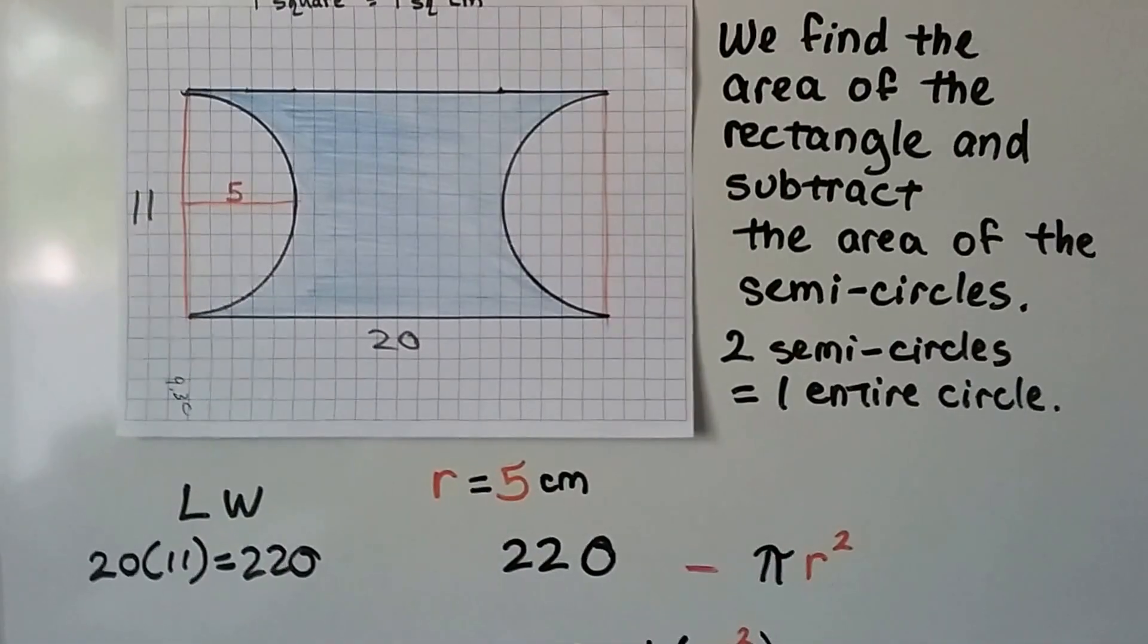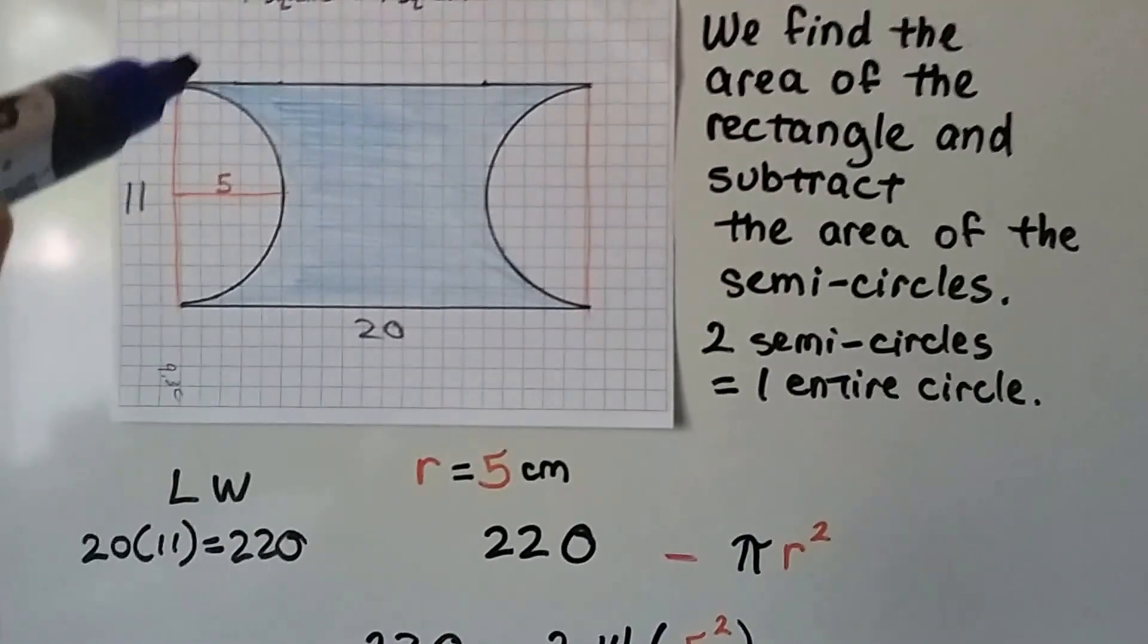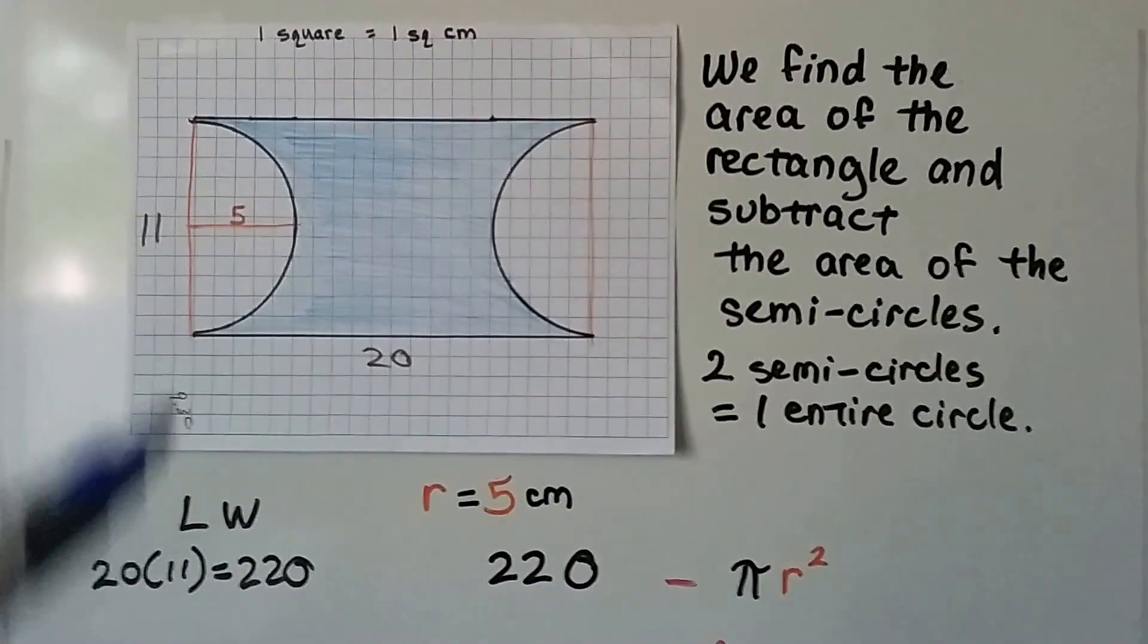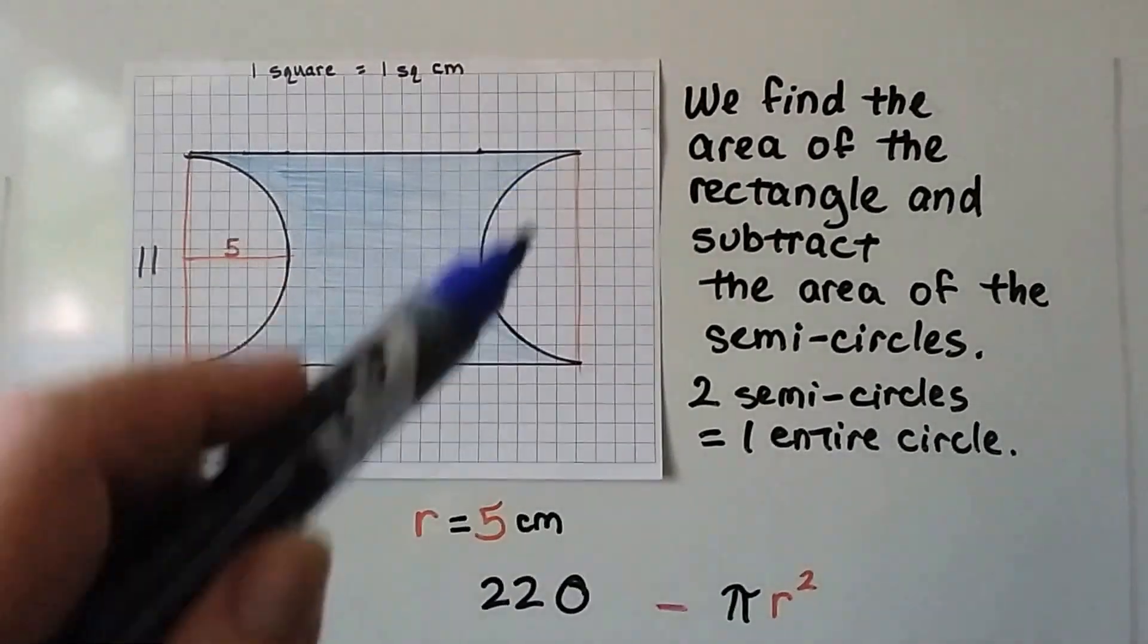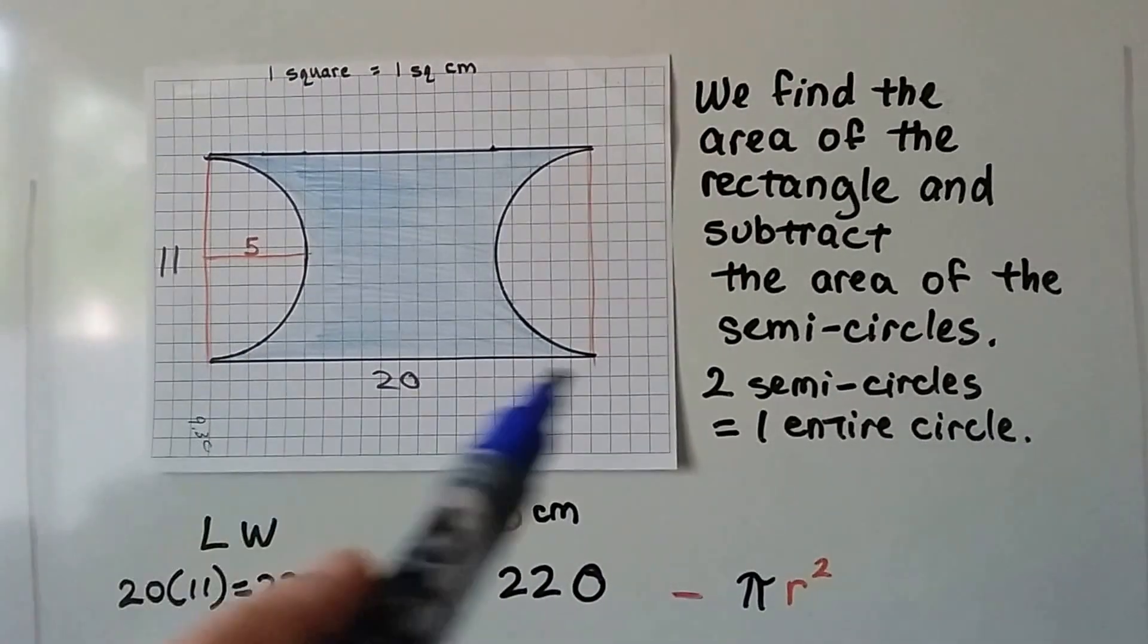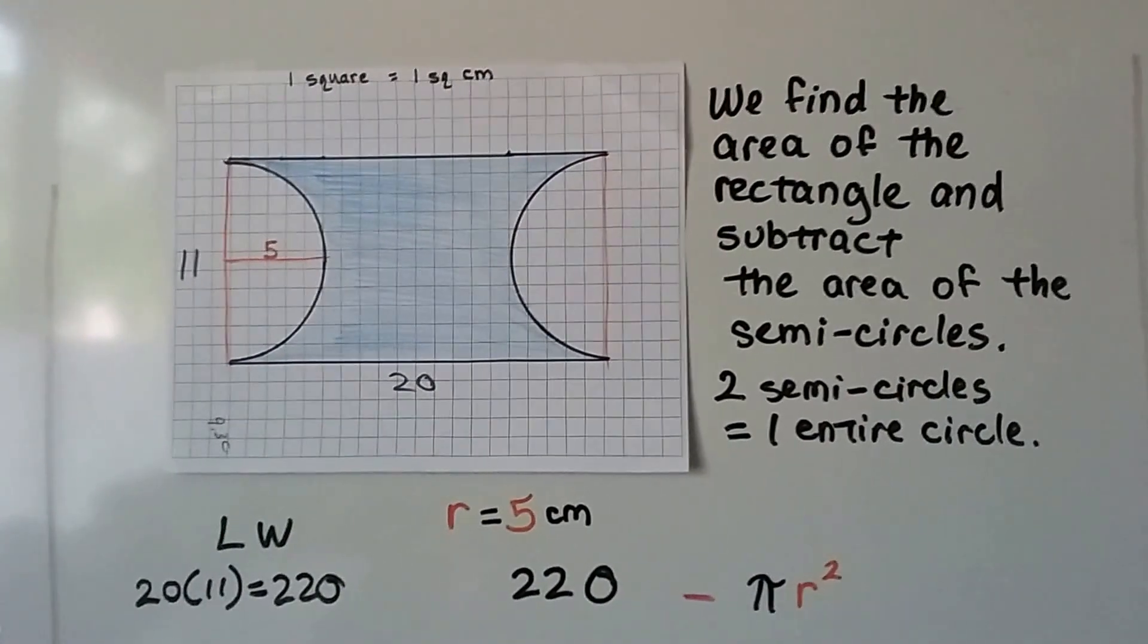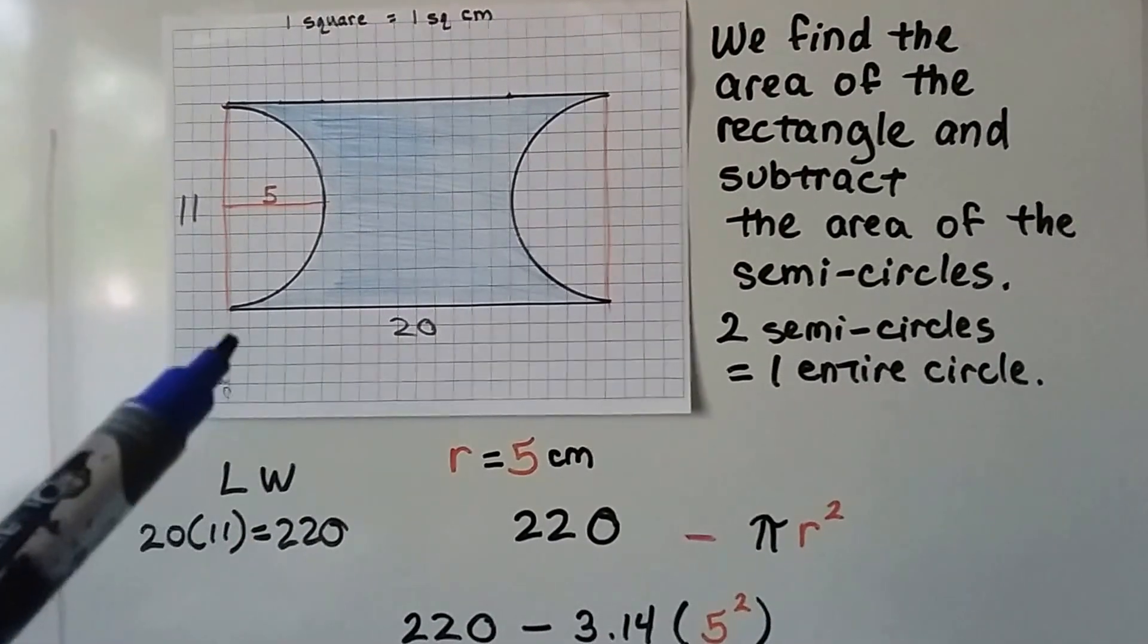Let's do this one. We're going to find the area of the entire rectangle and then subtract these semicircles. We have two semicircles; if we put them together, we have one entire circle. So we're going to do the area of this entire rectangle and subtract the area of a circle.